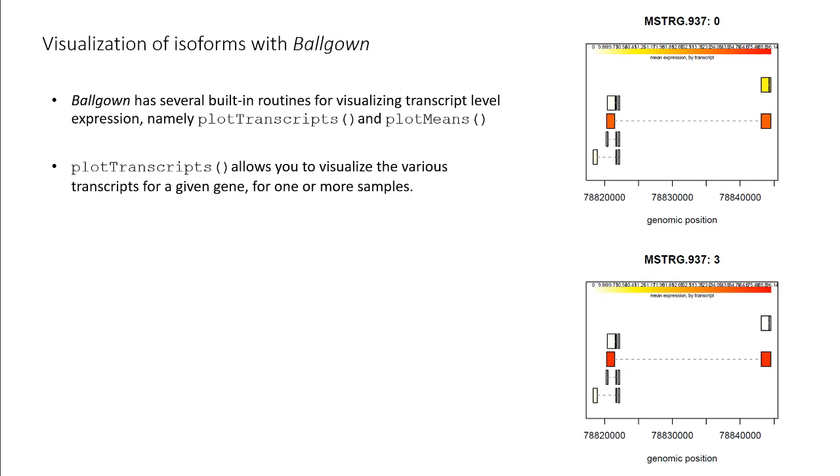plotTranscripts allows you to visualize the various transcripts for a given gene for one or more samples. plotMeans allows you to visualize the mean abundance of the various transcripts between different groups for a given gene.